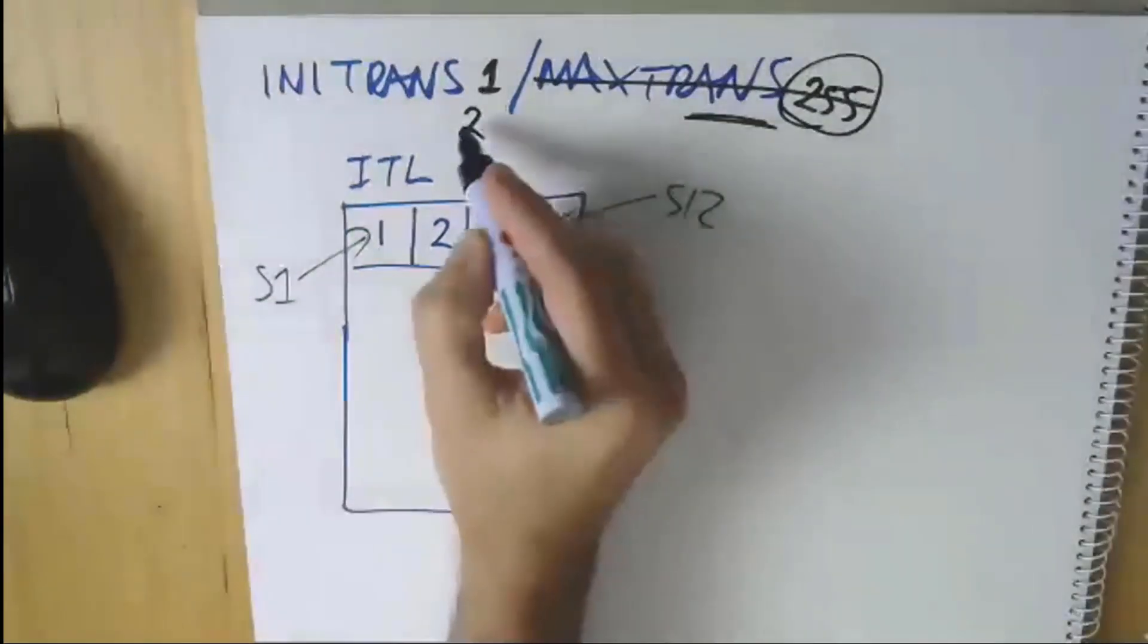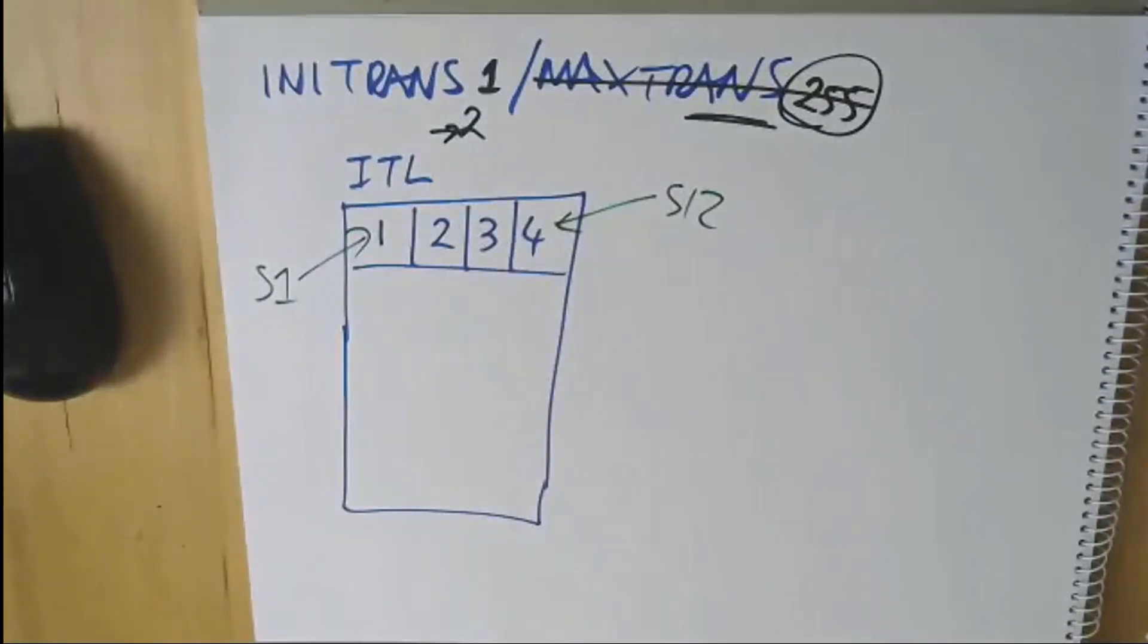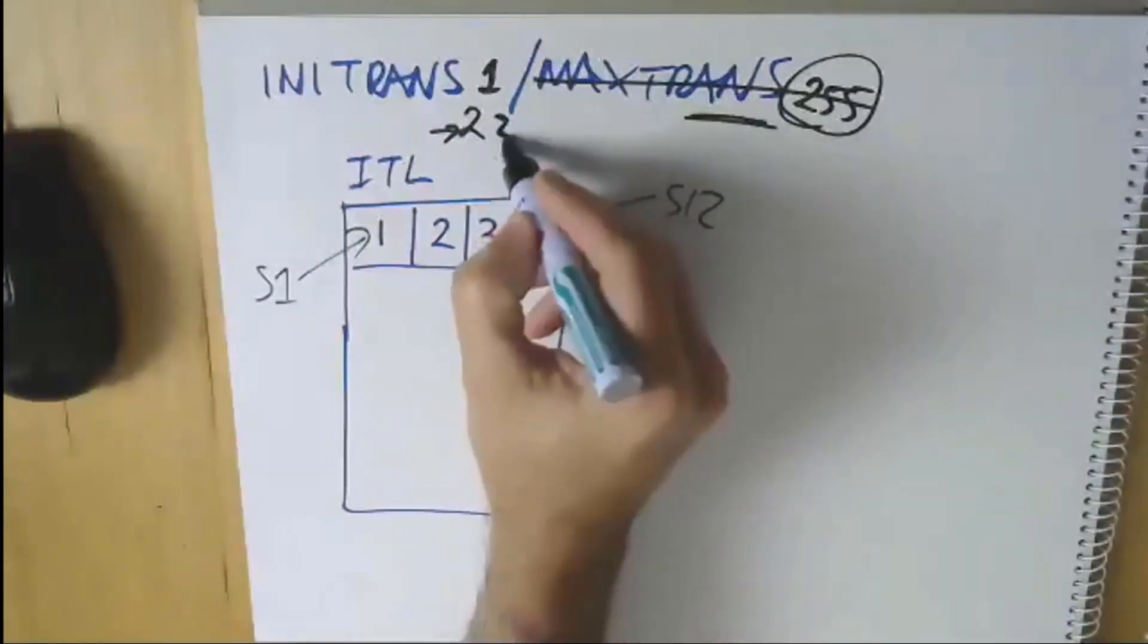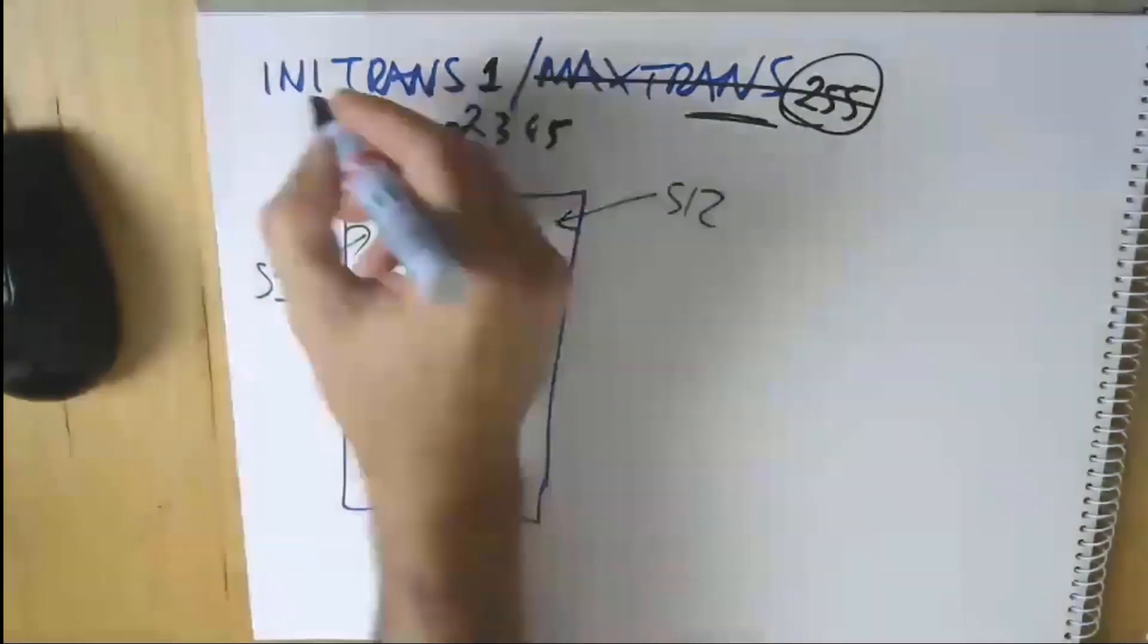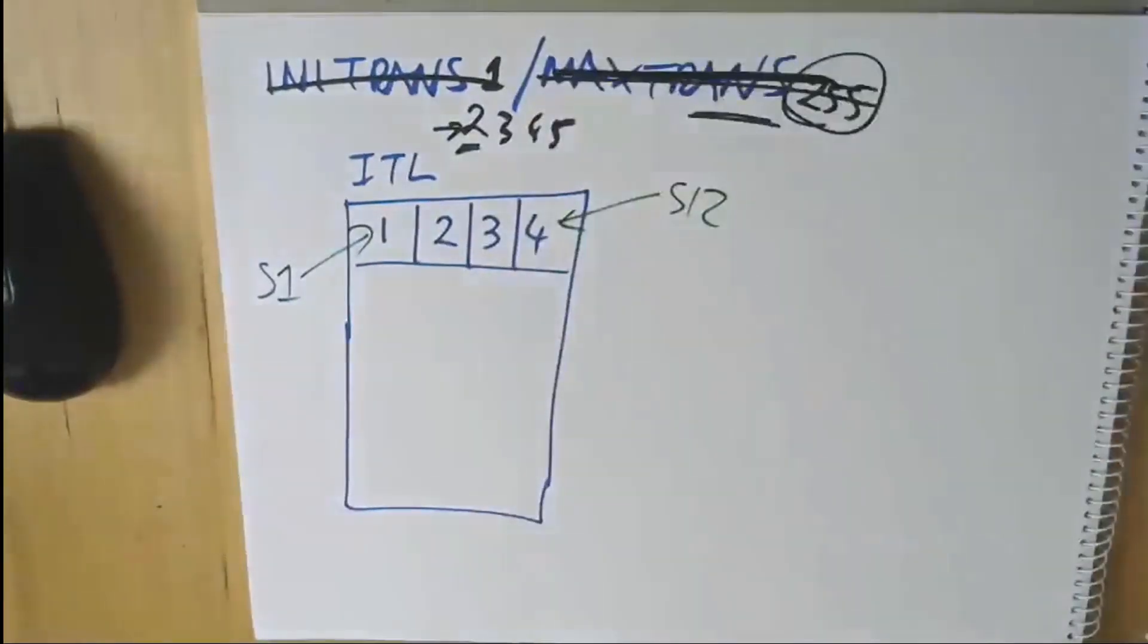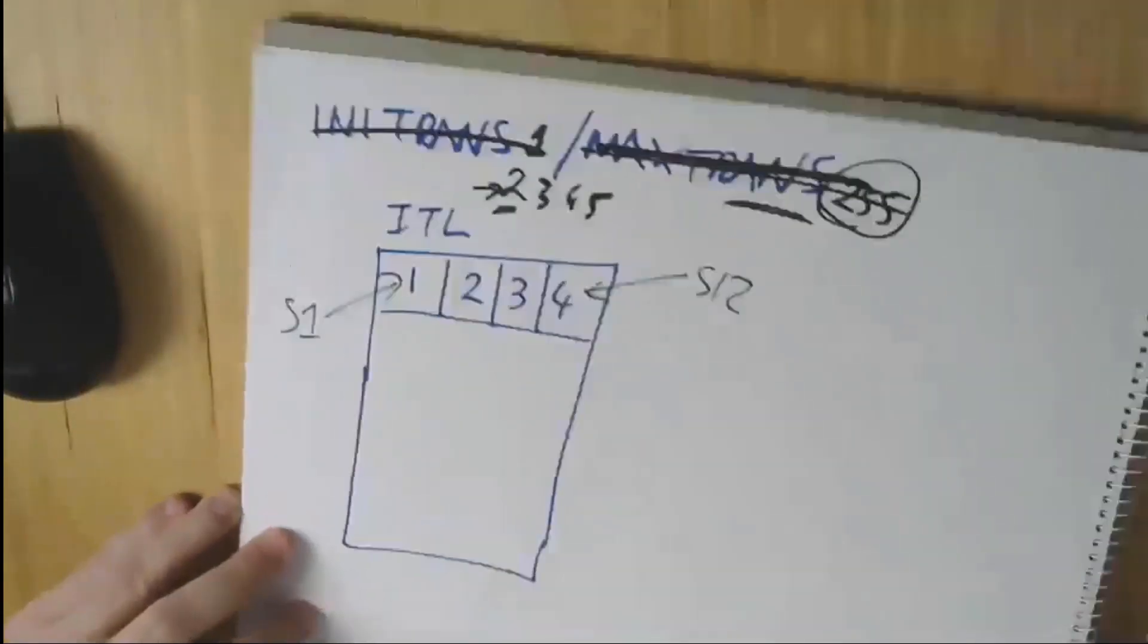INITRANS, as we said, I think it's set to two now even if you nominate it as one. We just always want to have that second slot available. You can choose to set it to perhaps three or four or five. It's pretty rare. One thing you might choose to do is actually set it to a number slightly higher than two if you're being very aggressive with your PCTFREE settings to make sure you're not going to run out of transaction slots for concurrency. But once again, 99.9% of applications out there can quite happily get away with the default for INITRANS and definitely the default for MAXTRANS.